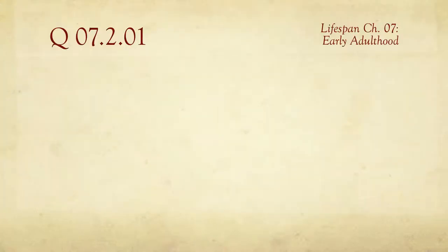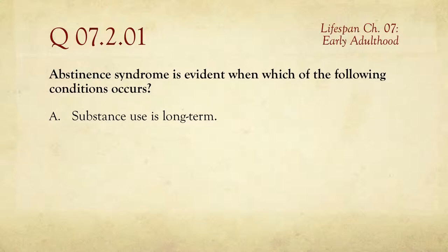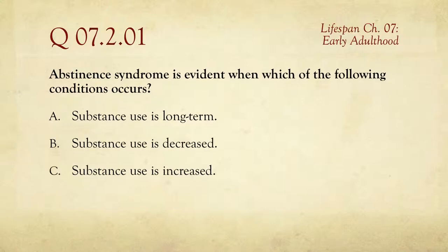The first question in this quiz is: abstinence syndrome is evident when which of the following conditions occurs? So: substance use is long-term, substance use is decreased, substance use is increased, and substance use is withheld.